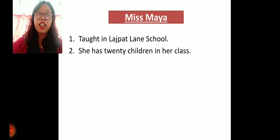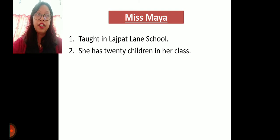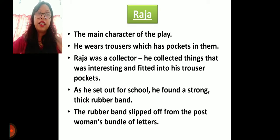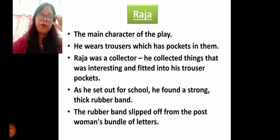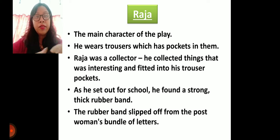Miss Maya has 20 children in her class. Remember the name of the school — Large But Lean School — and among those 20 children we have Raja, Lena, Ali, and others. Raja is the main character of the play. The whole play centers around Raja and Miss Maya. Other characters also have roles but they are very small.